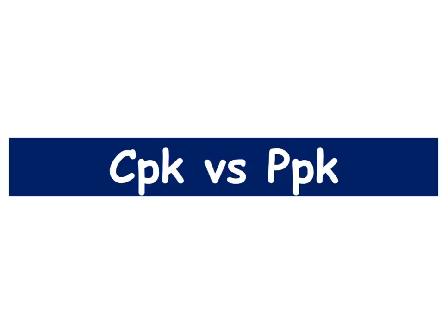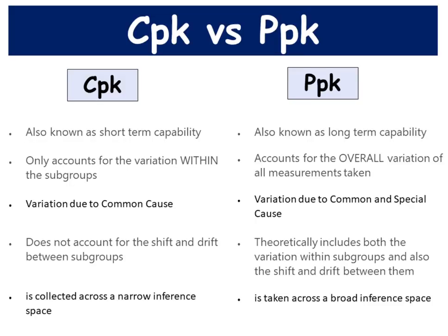What is the difference between CPK and PPK? CPK is known as short-term capability while PPK is long-term capability. CPK only accounts for the variation within subgroups while PPK accounts for the overall variation of all measurements taken. Short-term capability consists of variation due to common cause, while long-term capability consists of variation due to both common and special cause. CPK does not account for shift and drift between subgroups, while PPK theoretically includes both the variation within subgroups and also the shift and drift between them. Data for short-term capability is collected across a narrow inference space, while data for long-term capability is taken across a broad inference space.